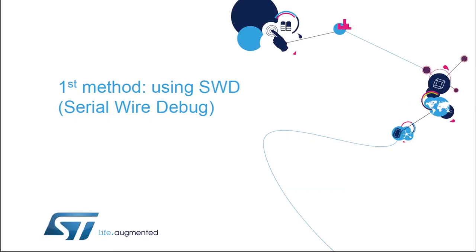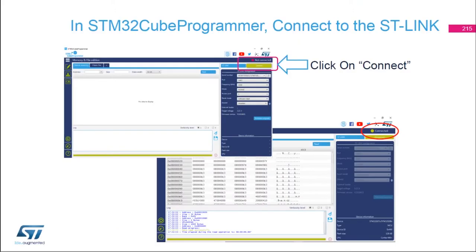The first method uses SWD, the Serial Wire Debug interface. We will be using the STM32CubeProgrammer. If you are using Keil MDK-ARM 5 from a previous module, please disconnect and close Keil MDK-ARM 5, then open STM32CubeProgrammer.